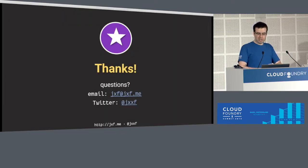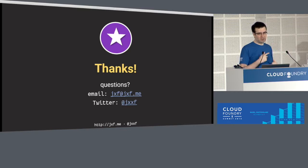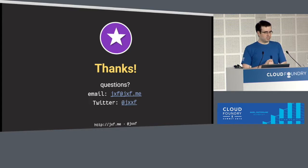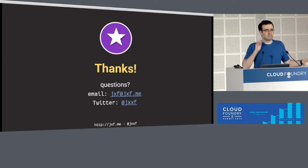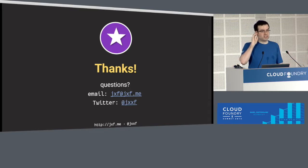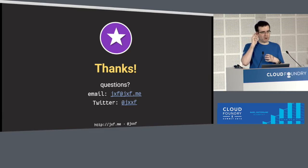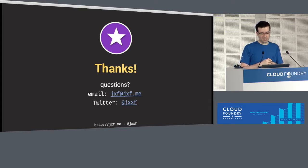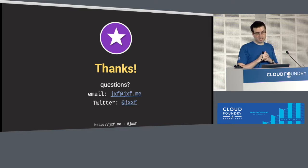Thanks very much for listening. If you have questions, we have about four minutes. The API shim is available on GitHub at github.com/fj/cf-api-shim. The proxy implementation is specific to the three firms — I'm working on extracting that out of their specific implementations. I'll update the slides to include a link.